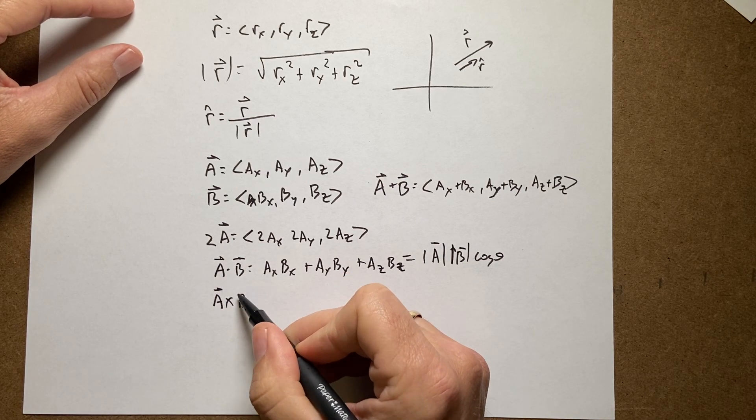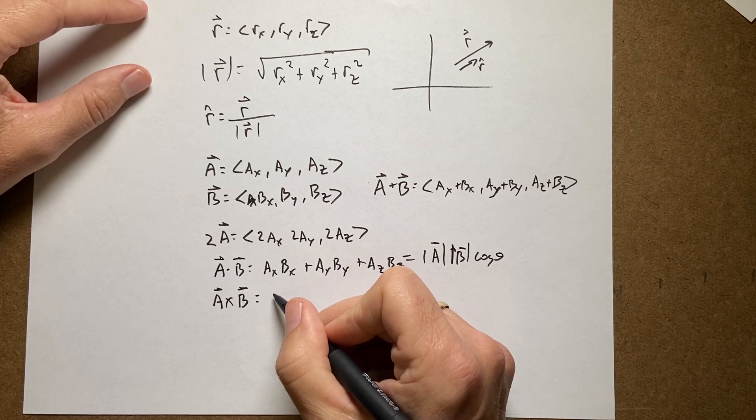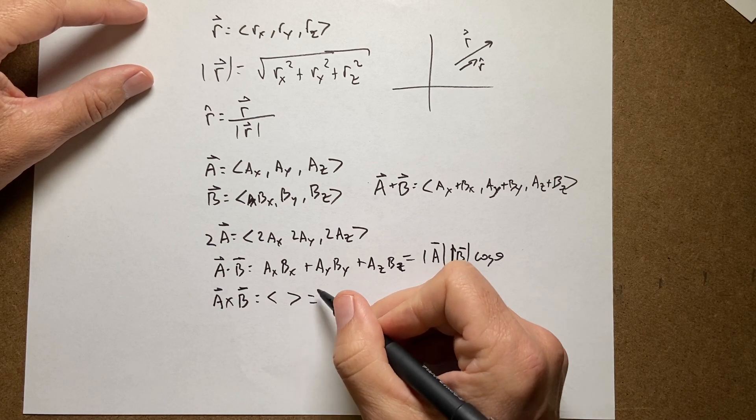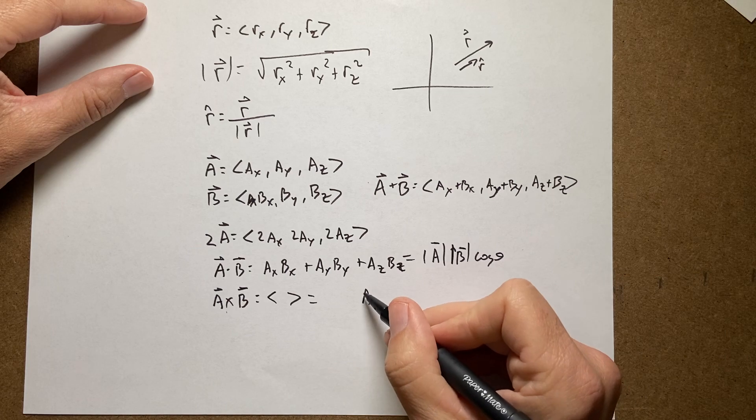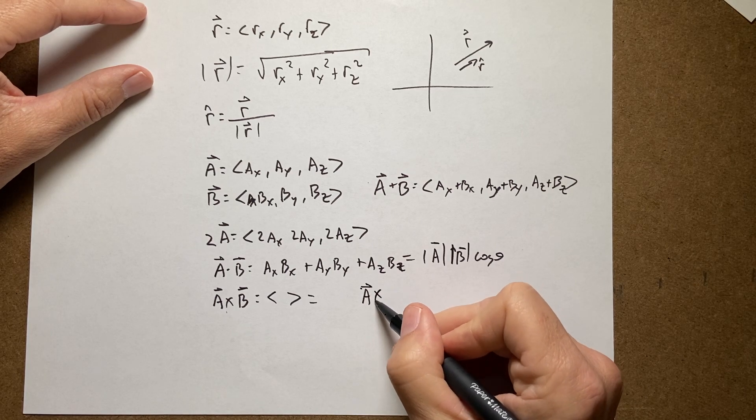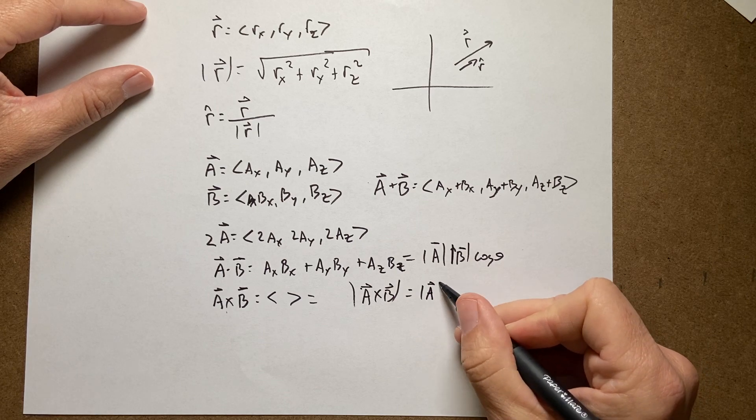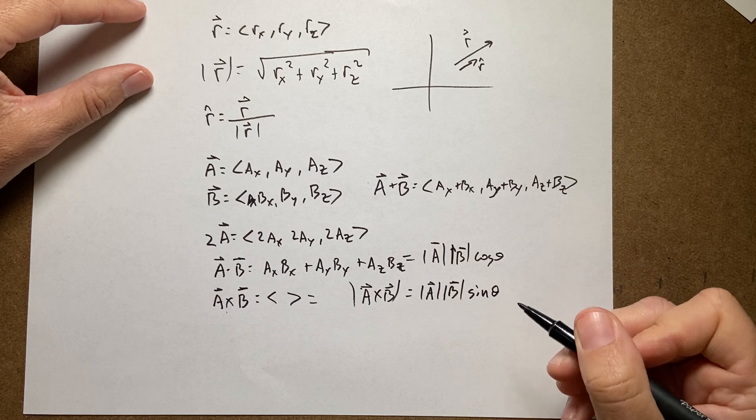There is also the cross product, a cross b. It gives you a vector, I don't want to write it out. I'll show it to you later when we get to it. But the magnitude of a cross b is the magnitude of a times the magnitude of b times the sine of the angle between the two vectors.